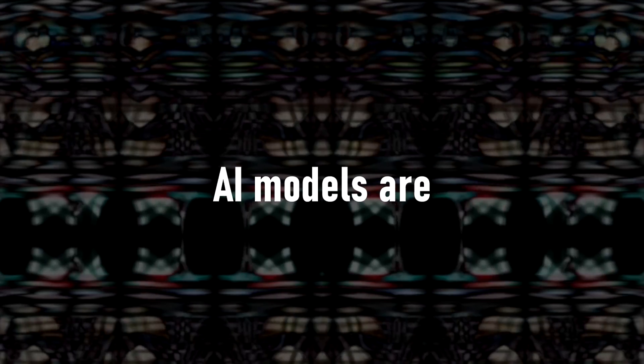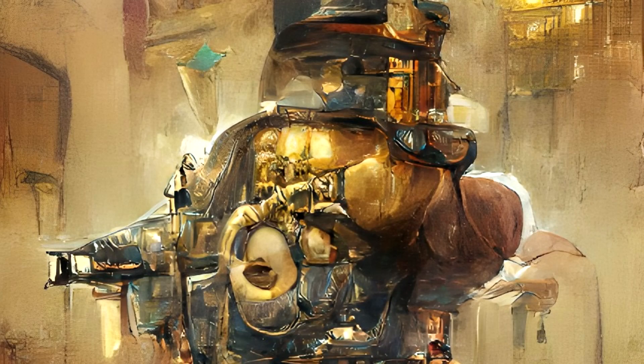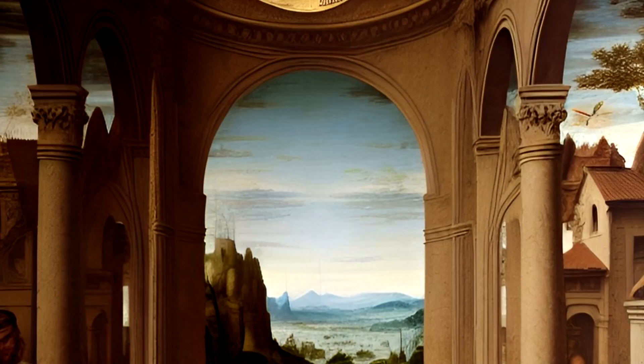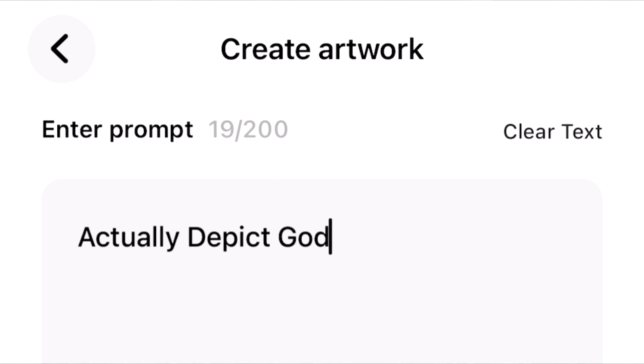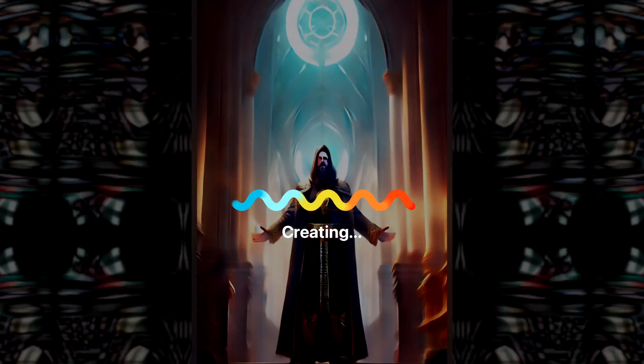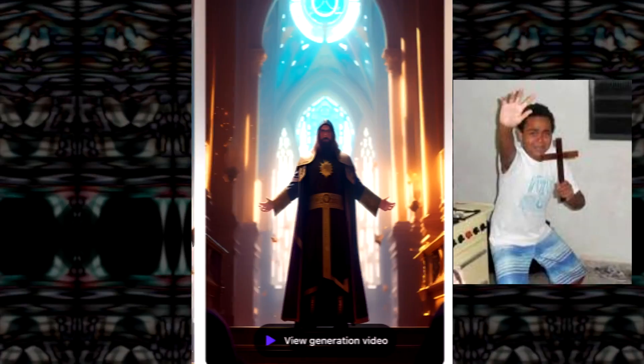AI models are quickly getting out of hand. When I started the channel, AI generated images looked something like this, and now they come out looking like total finished masterpieces. We could just load up one of the models and hit generate and probably get some beautiful results, but in order to generate images specifically tailored to this challenge, we're going to make some basic reference images in Unreal Engine to feed into the AI.